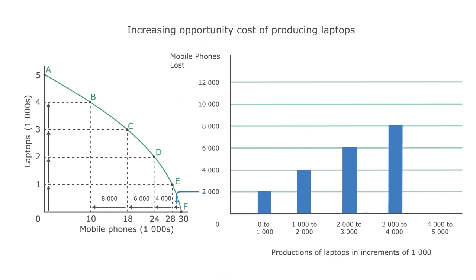You can see that the initial opportunity cost of producing one thousand laptops was relatively small — only two thousand mobile phones. But the final opportunity cost of raising production of laptops from four thousand to five thousand is ten thousand mobile phones. By the time the production of laptops reaches five thousand, there are not enough resources to produce any mobile phones.